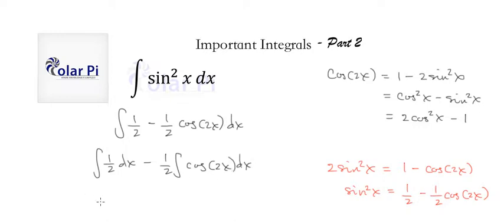And, of course, 1 half dx has integral 1 half x, and then this other one is going to be 1 quarter sine 2x. And 1 quarter because we have to multiply by 1 half after taking the antiderivative of cosine 2x.